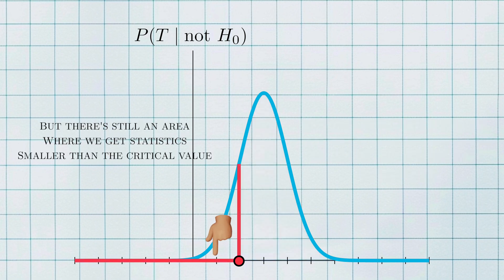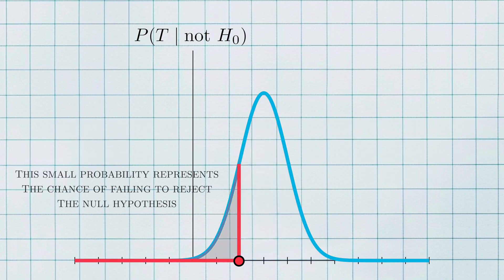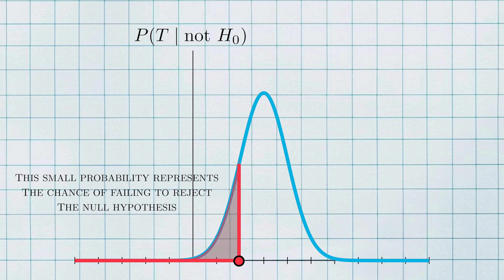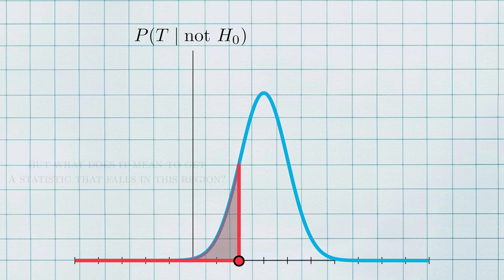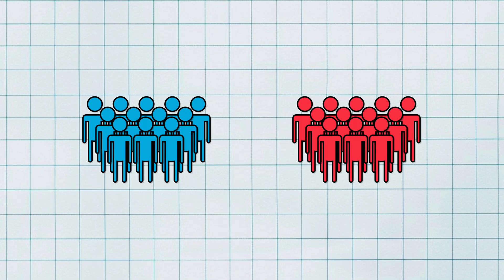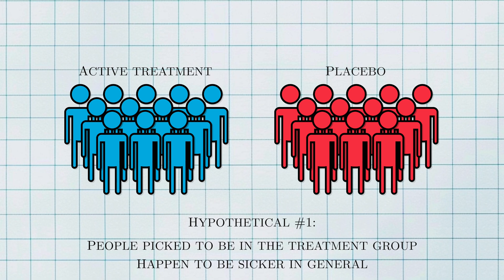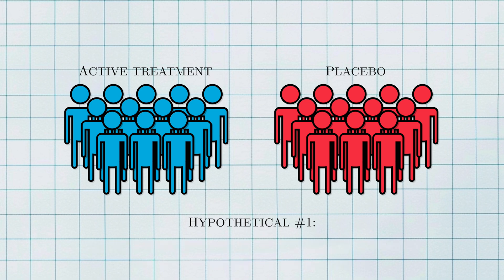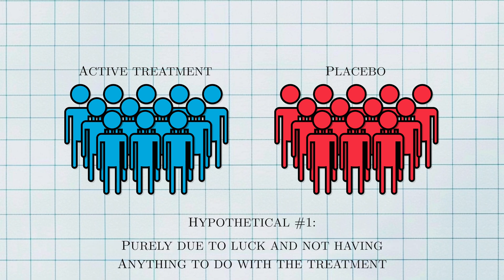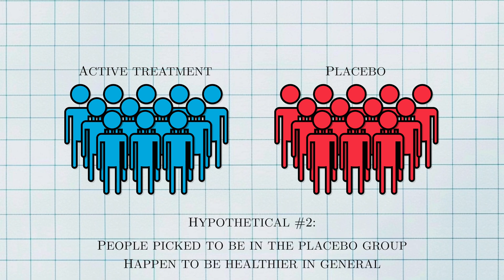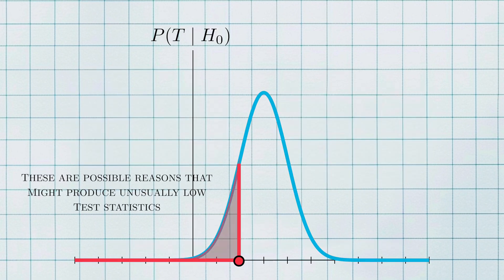But notice that there's a small region that's still smaller than the critical value. The probability associated with this region represents a small but non-zero chance that we fail to reject the null hypothesis even in the case where it's actually false — this is a type 2 error. Going back to the treatment versus placebo example, it's possible that the people who are put in the treatment group are just sicker than the people in the placebo group. This will make the treatment look much worse than it actually is, purely due to luck and not due to the treatment itself. Similarly, you might get healthier people in the placebo group. In either case, you just get unlucky with your data and get an unusually small test statistic.